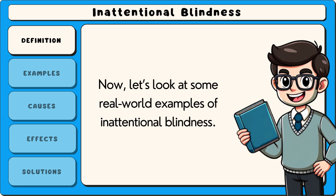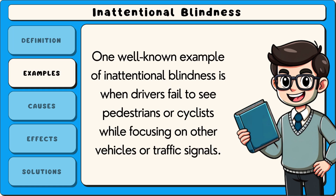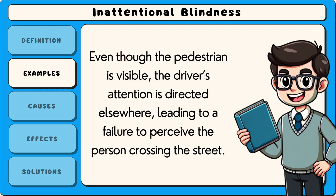Now let's look at some real-world examples of inattentional blindness. One well-known example is when drivers fail to see pedestrians or cyclists while focusing on other vehicles or traffic signals. Even though the pedestrian is visible, the driver's attention is directed elsewhere, leading to a failure to perceive the person crossing the street.